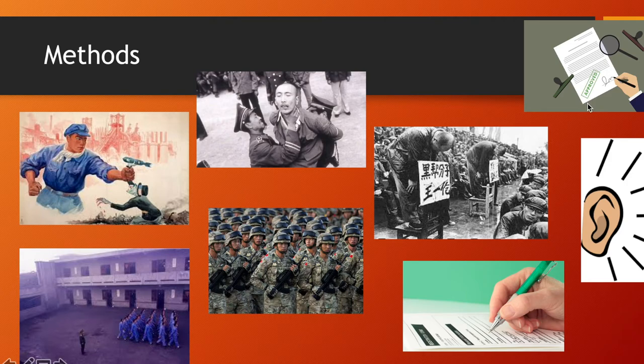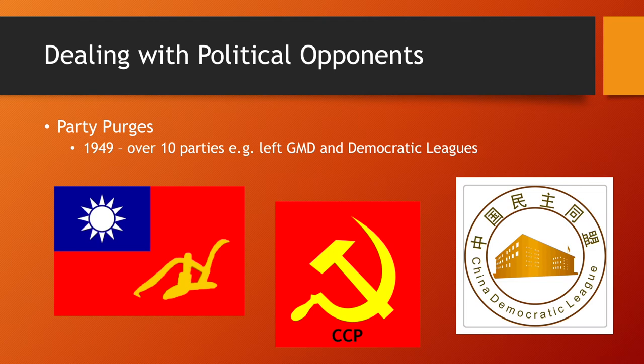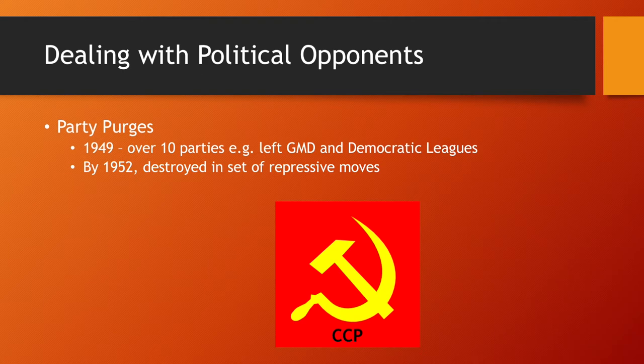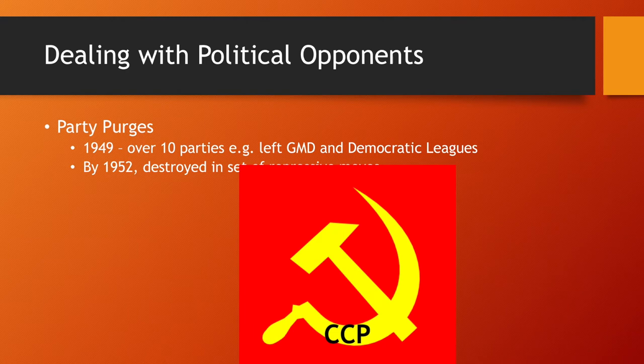Party purges were very important. In 1949, there were over ten political parties, such as the left version of the Nationalists — the left Guomindang — and the Democratic Leagues. By 1952, they were destroyed in a set of repressive moves, meaning the Chinese Communist Party was the sole legal party within China, giving it absolute authority and creating a one-party state.